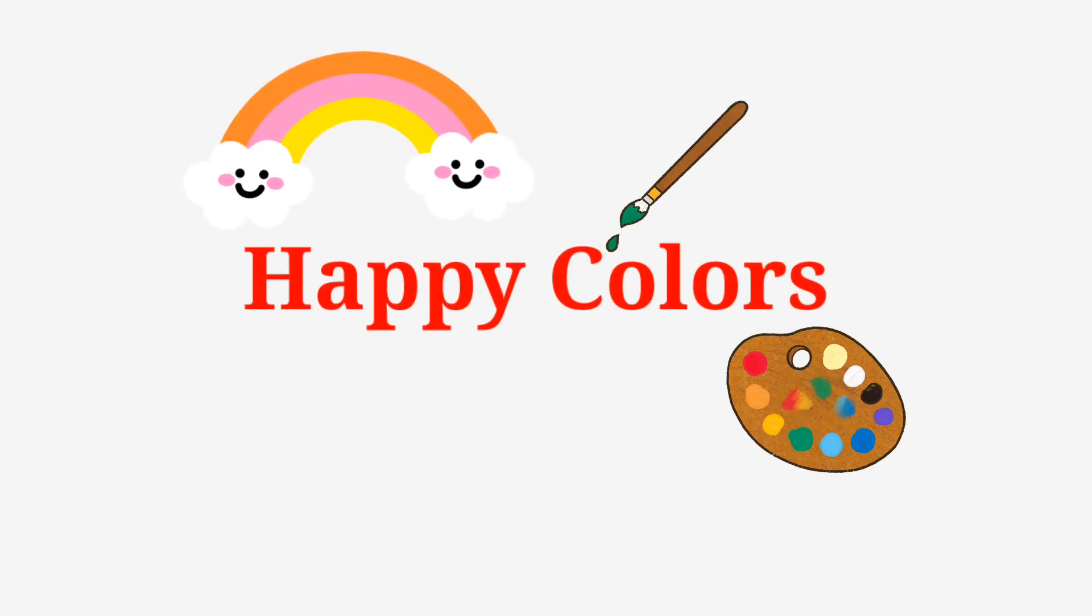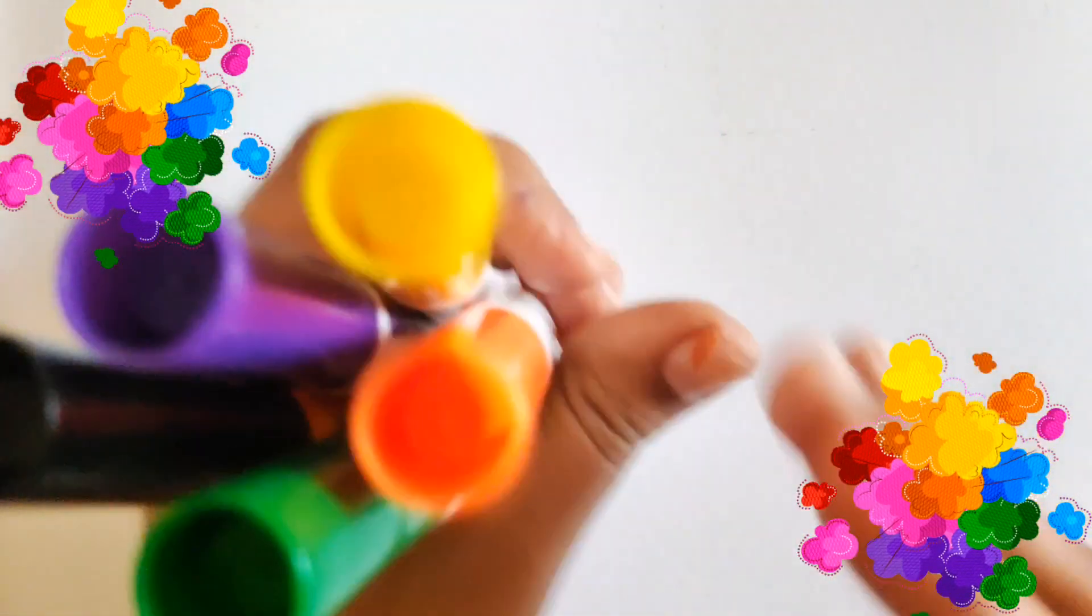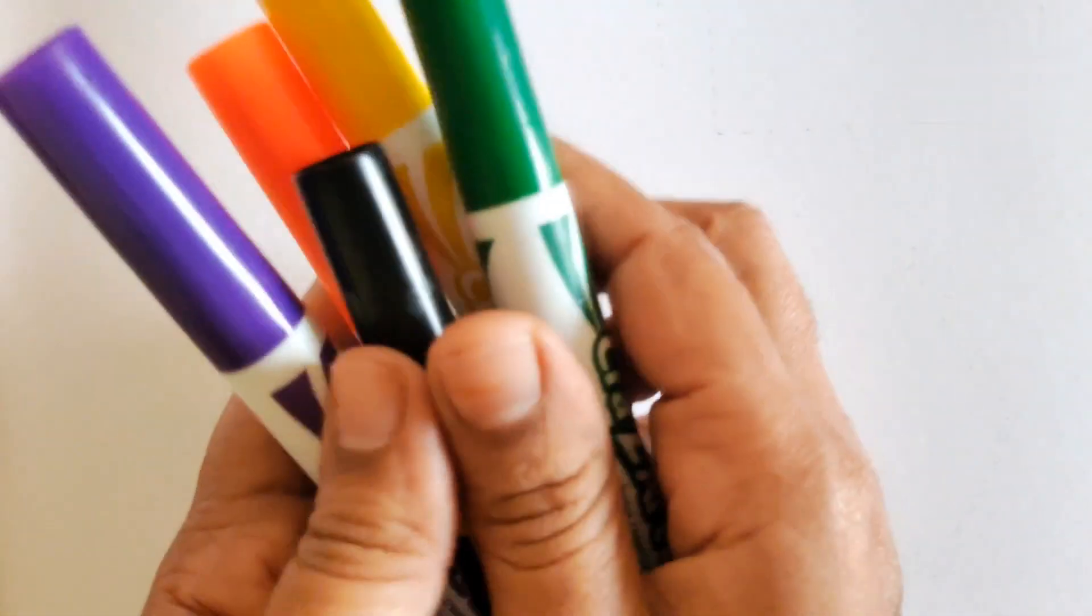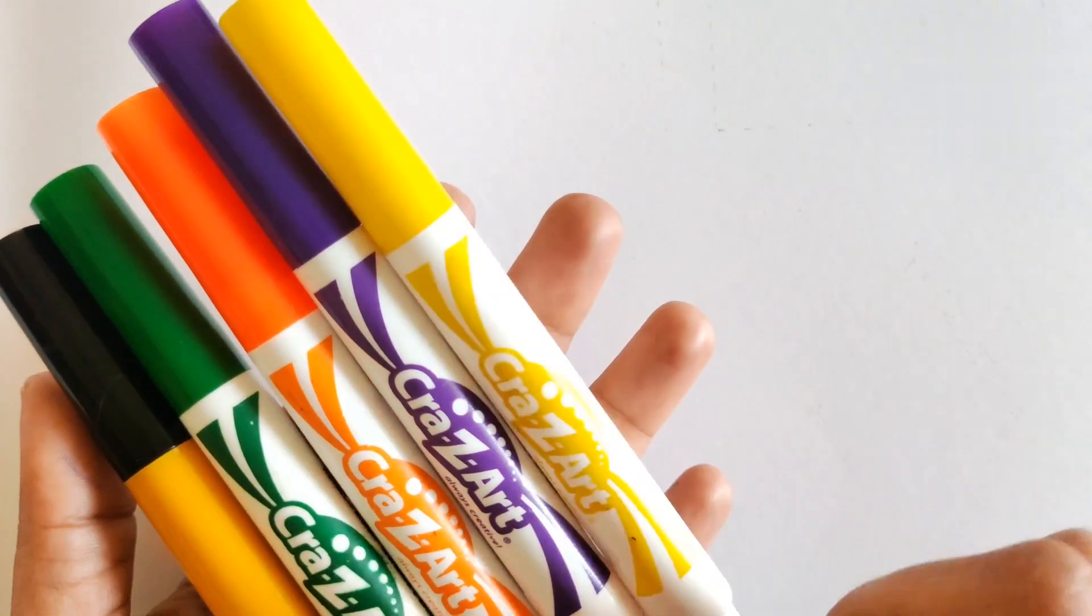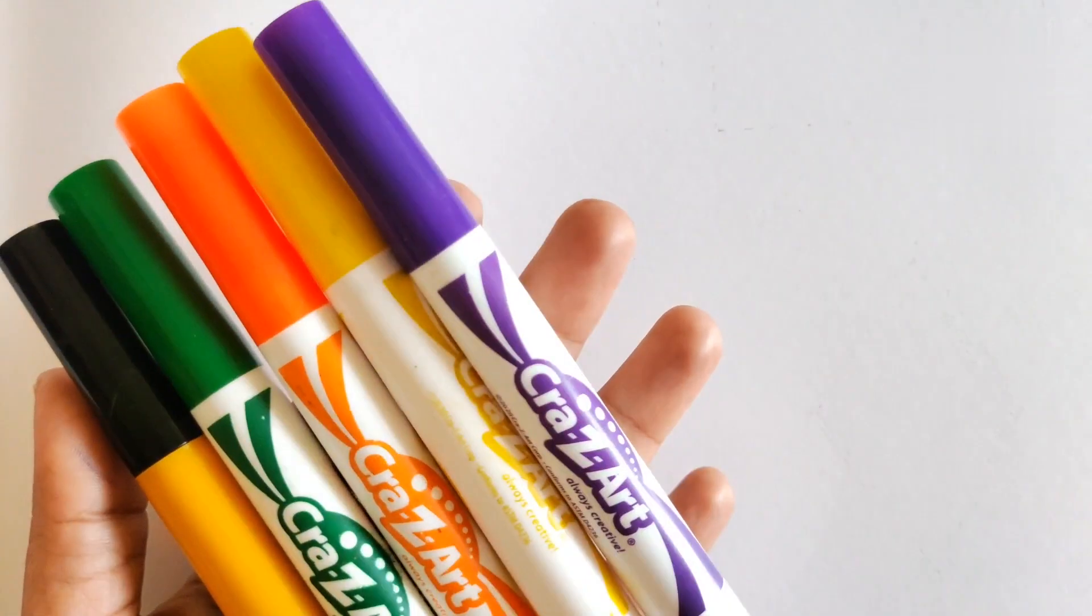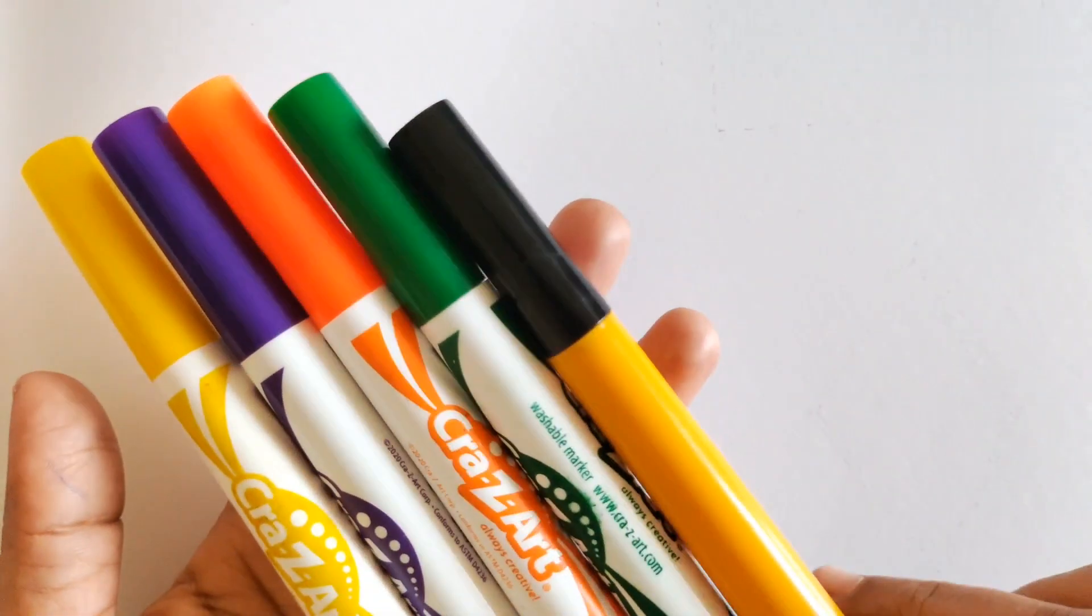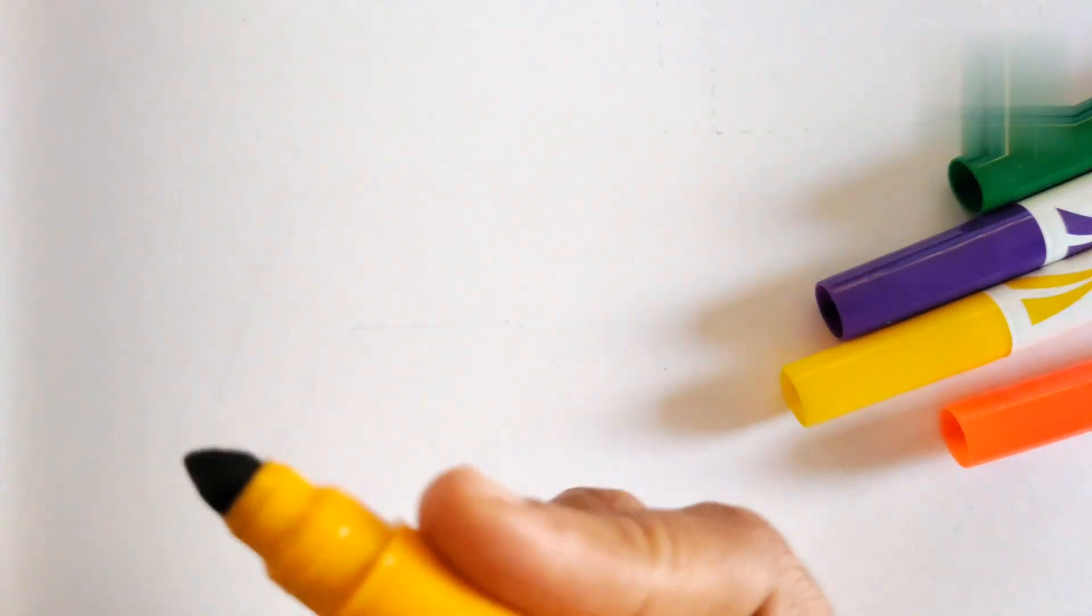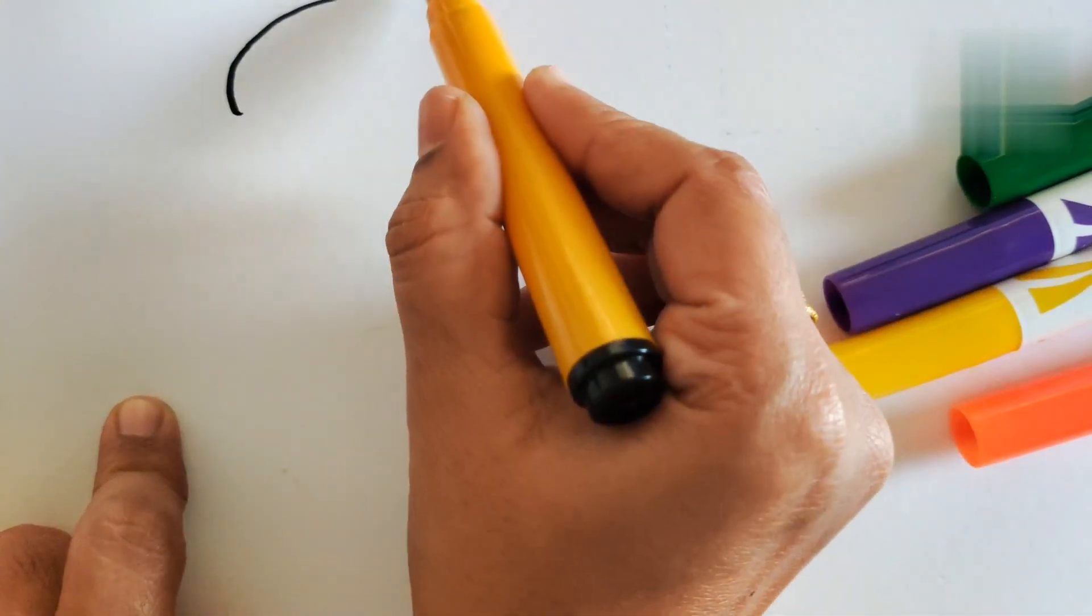Hello friends, welcome to my YouTube channel Happy Colors. Today we will learn about the different colors and different shapes. I have yellow color, purple color, orange color, green color, and black color. Let's create a shape of oval.